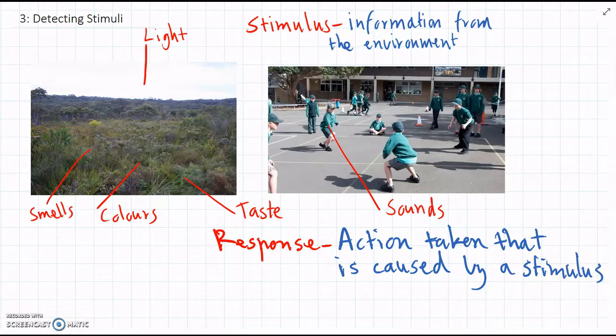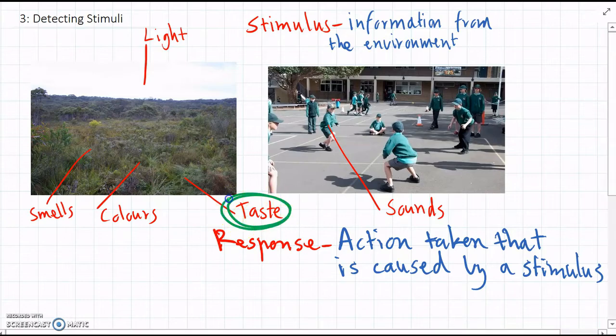For example, if you taste some really bad food, as the stimulus, then your response would probably be to spit out the food straight away. Or if you're in Africa and you hear the roar of a lion or another predator, that's the stimulus, then your response will probably be to run away.